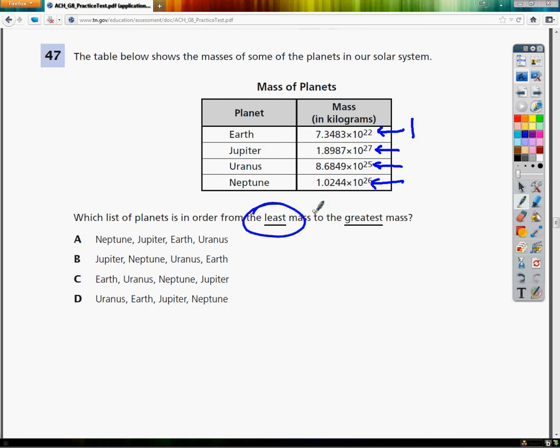From there, I would go 23, 24, 25. So here we go. And then 26 and then 27. So I need to have Earth first, Uranus second, Neptune third, and Jupiter fourth. E, U, N, J.